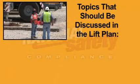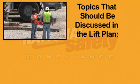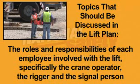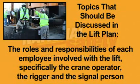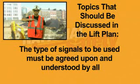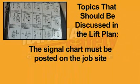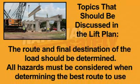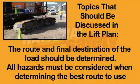Topics which should be discussed prior to beginning rigging include any hazards associated with the lift, including special precautions. The roles and responsibilities of each employee involved with the lift, specifically the crane operator, the rigger, and the signal person. The types of signals to be used must be agreed upon and understood by all. Hand signals are the most common method used. The signal chart must be posted on the job site. The route and final destination of the load should be determined. All hazards must be considered when determining the best route to use.